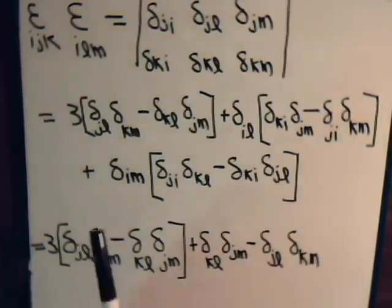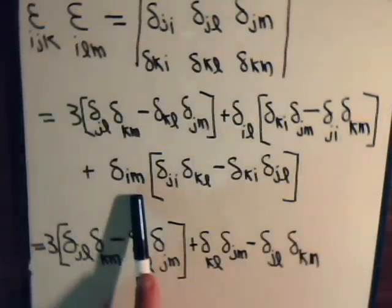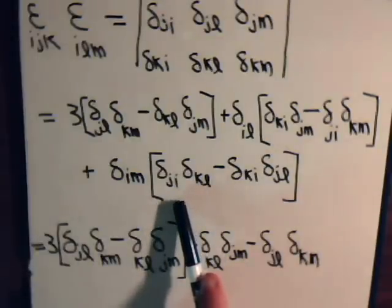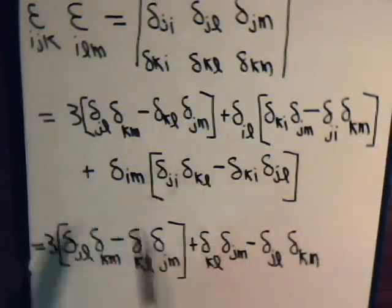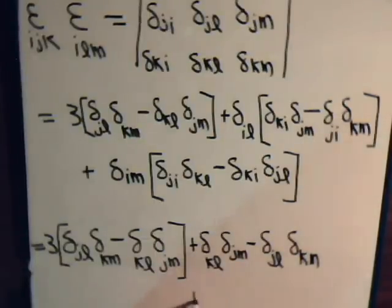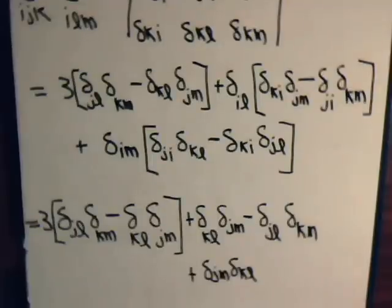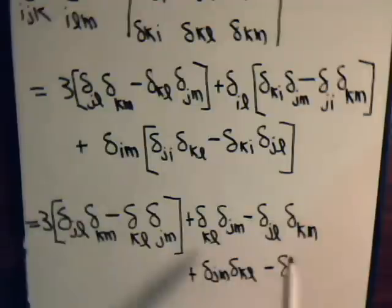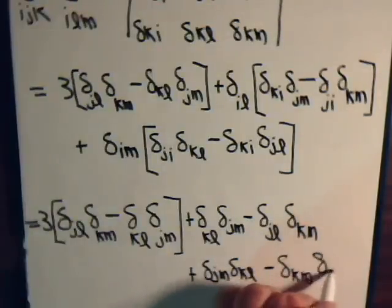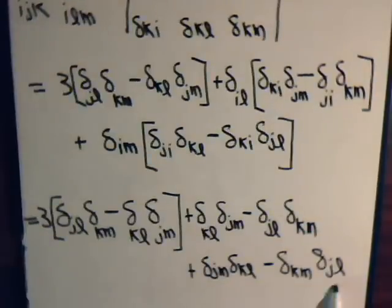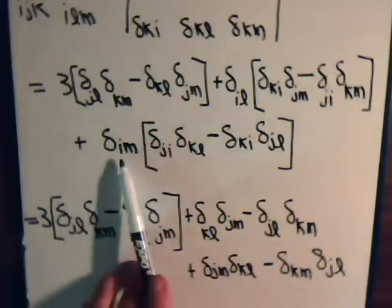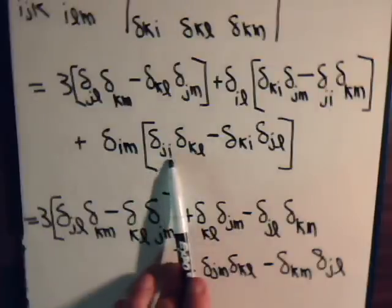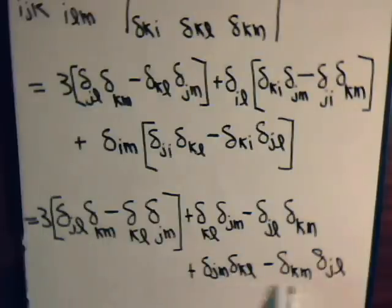And for this term, this is 0 unless I is the same as M. So that index is going to be an M — and that's going to be an M, and that's going to be an M. Of course, when I is M, that's just 1. So we have plus delta_JM * delta_KL minus delta_KM * delta_JL. Those come from this term with I being equal to M, as we see here and here.